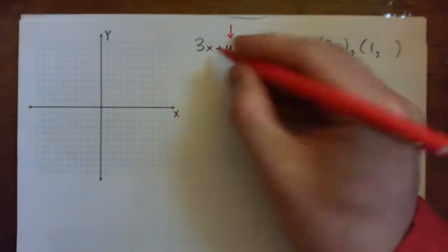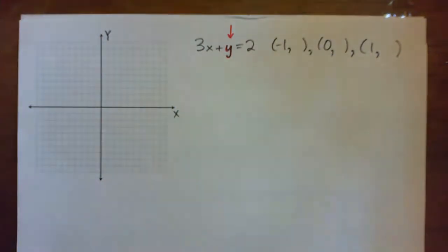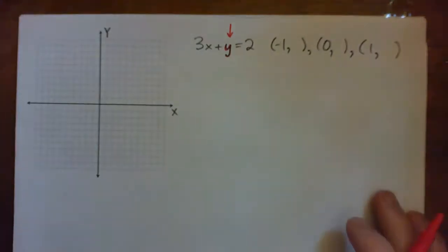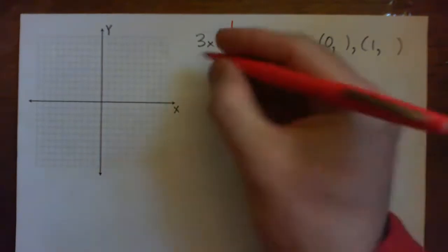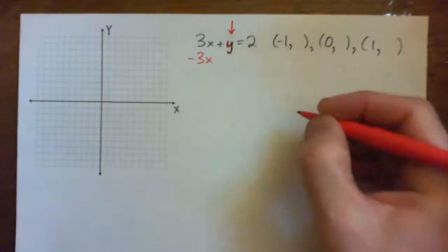So 3x is being added, right? So what's the inverse operation to adding 3x? How about subtract 3x, right?